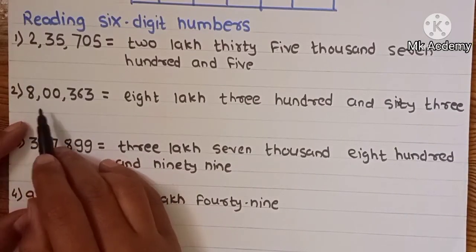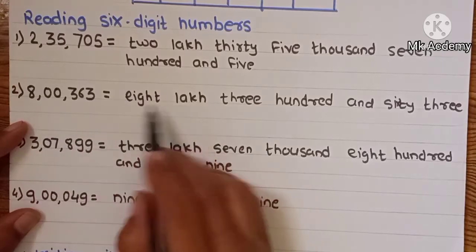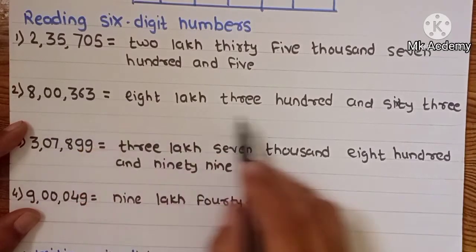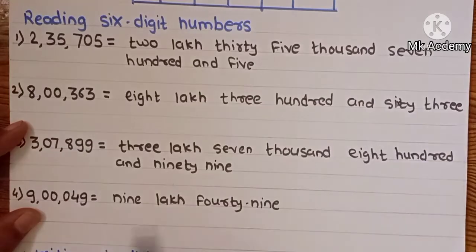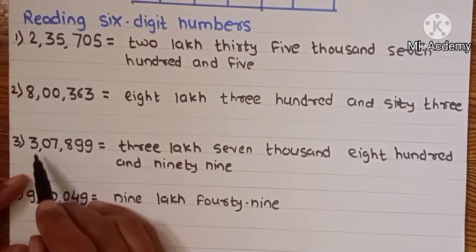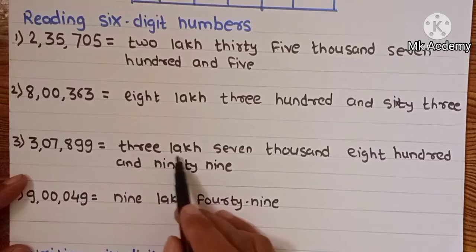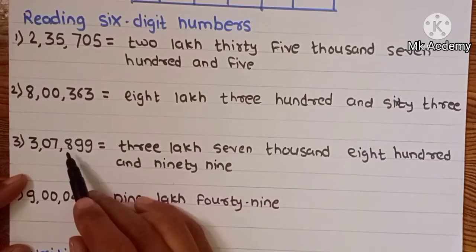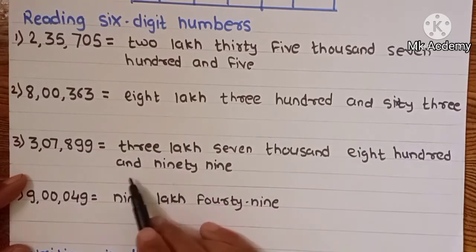Now the 2nd example: 8,36,300. Now the 3rd example: 3,07,899.